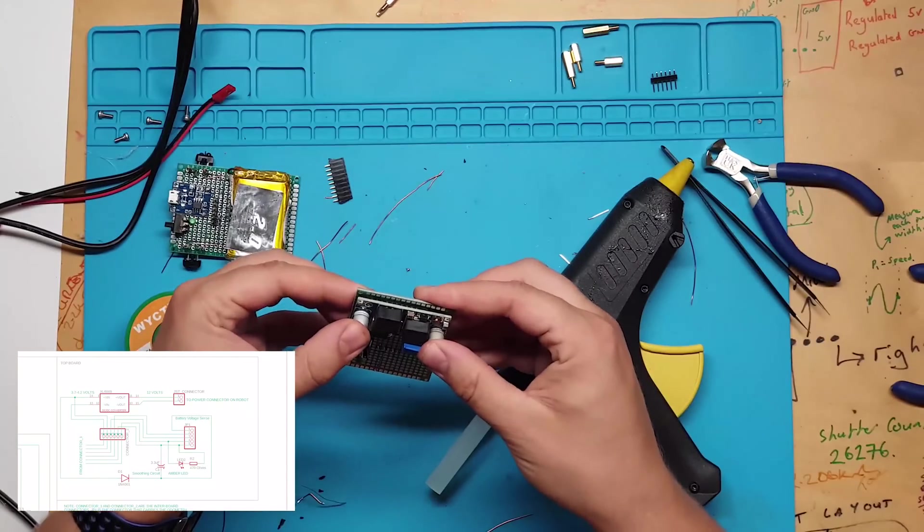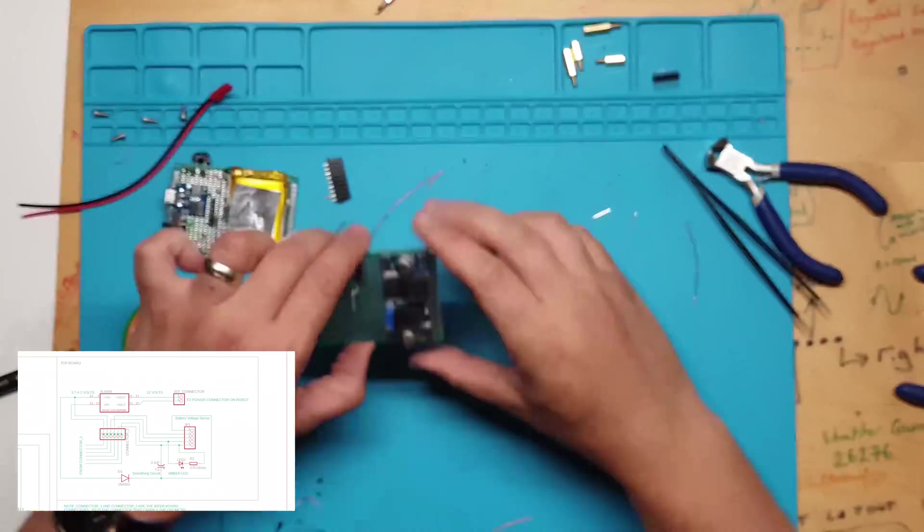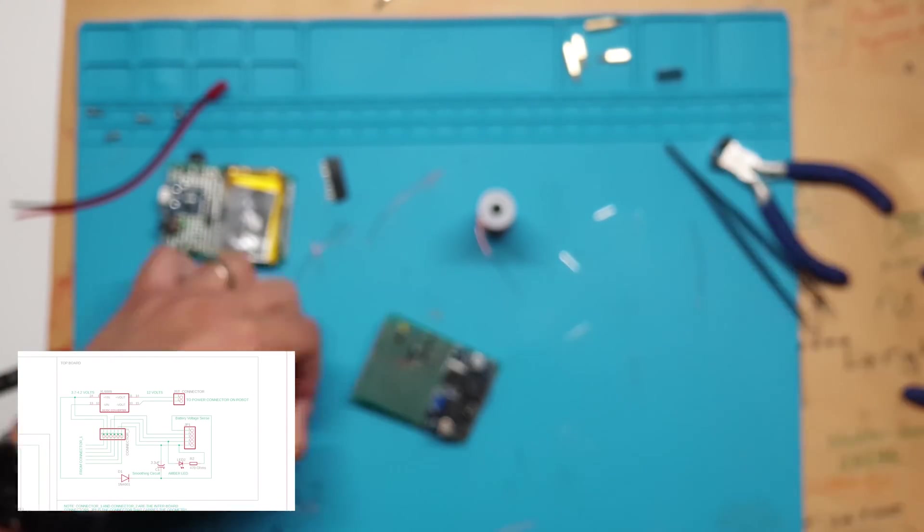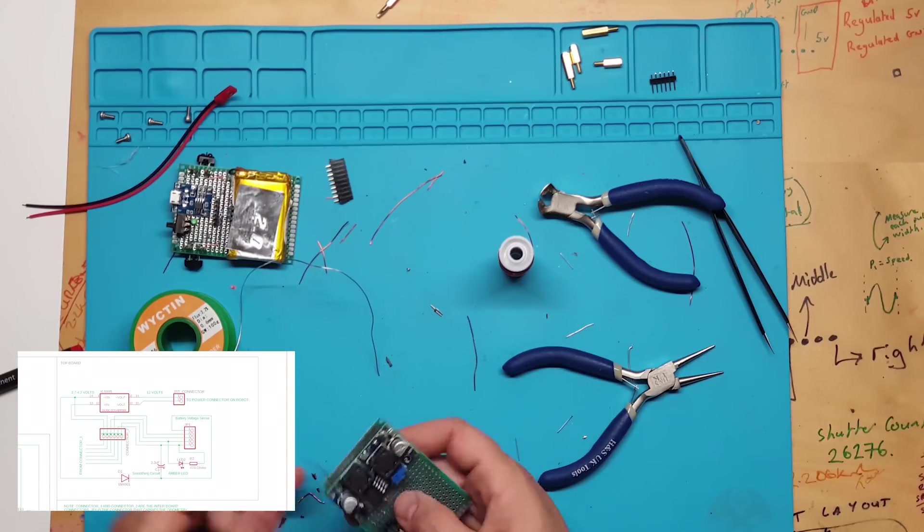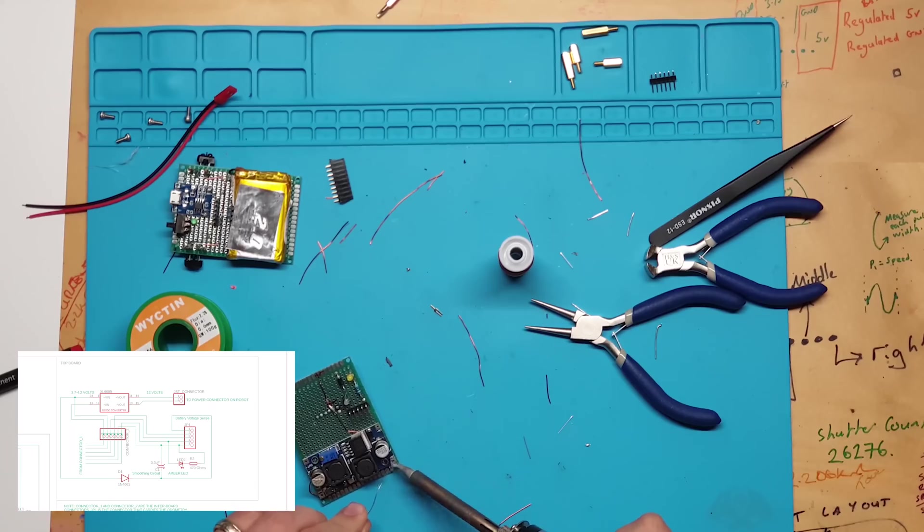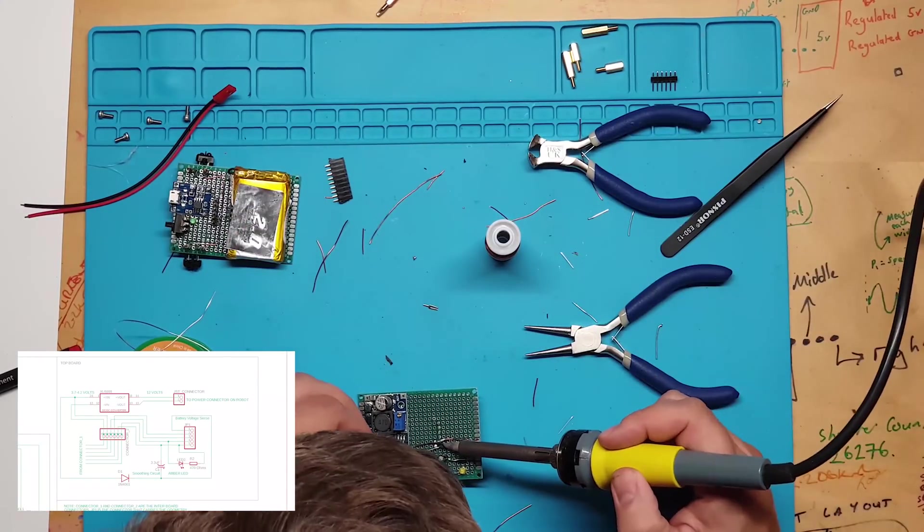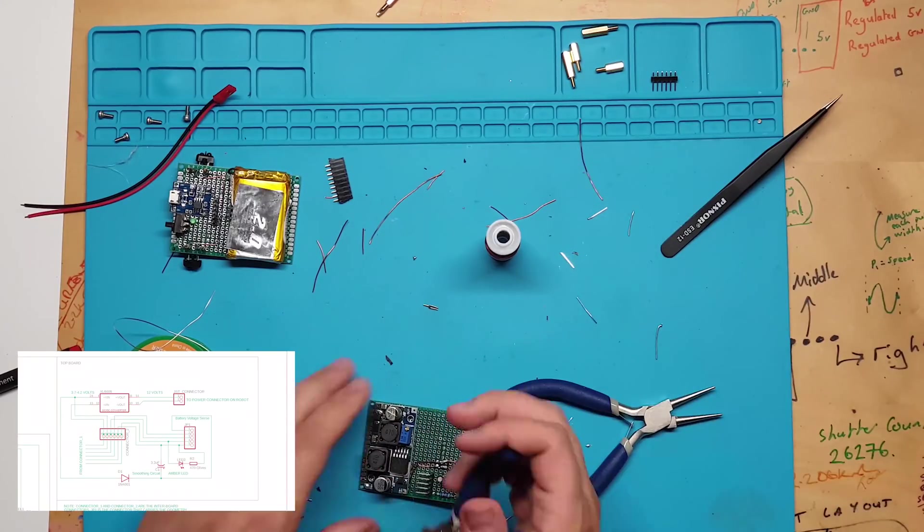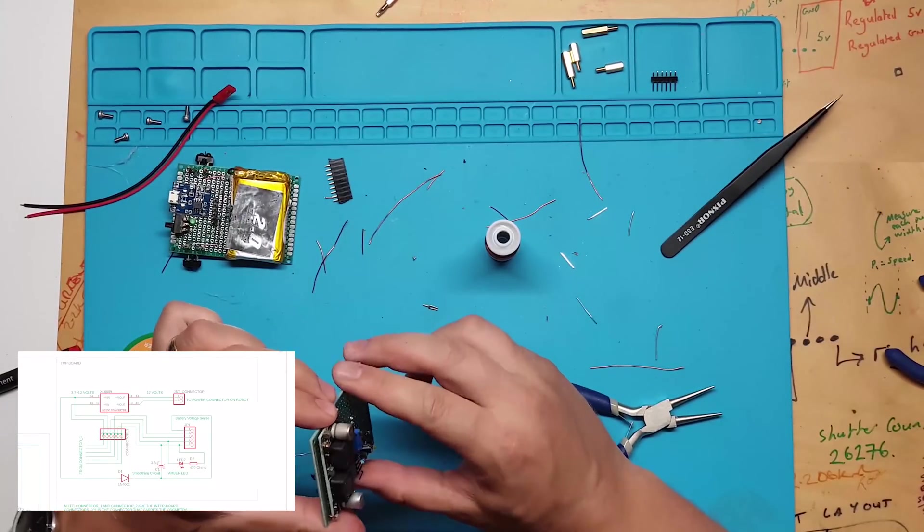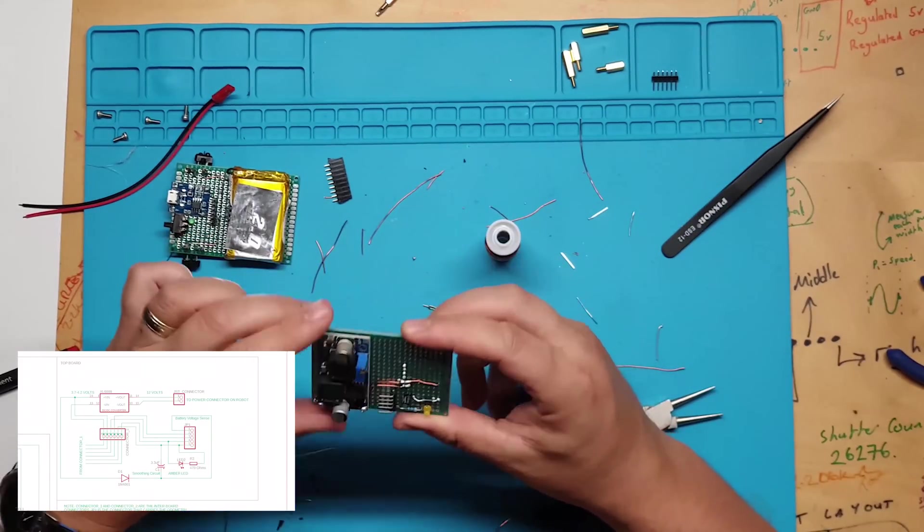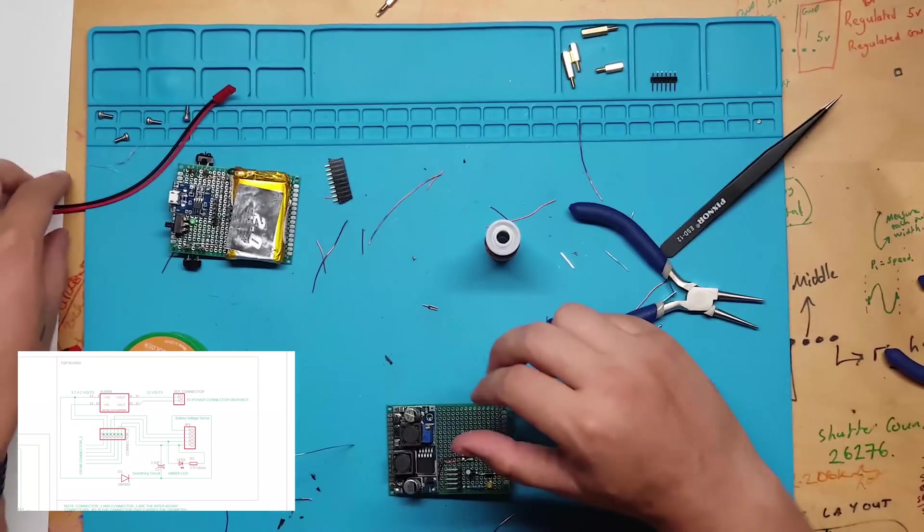I will now use hot glue to glue the DC to DC converter to the perf board. Next I am going to attach the battery voltage line and battery ground to the input of the DC to DC converter. When the top board is attached to the bottom board and the bottom board is switched on, battery voltage will go to this DC to DC converter and be converted to 12 volts.